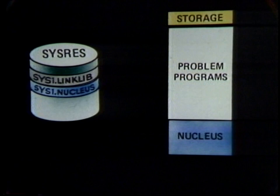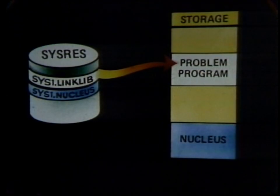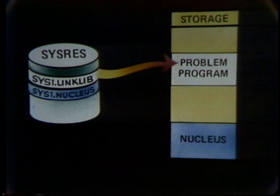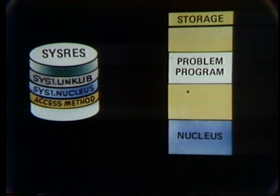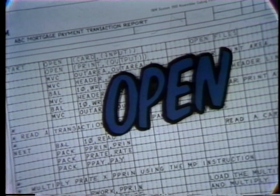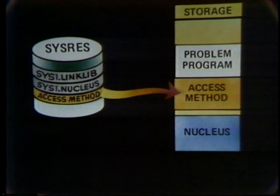Now let's see how a problem program gets loaded into storage. The loading routine is part of the nucleus. It retrieves a program from a program library — in this case, let's assume sys1.linklib — and then makes the necessary changes to the address constants in the program so that it can be loaded into any available storage. While we still have a problem program in storage, let's see how it gets its IO accomplished. In order to perform IO, an access method is required. If the access method is not already in storage, the supervisor will have to get it. The access methods reside in a system dataset. When the programmer is ready to process data, he issues an open macro in assembler language or some equivalent in a high-level language. The open macro causes control to be passed to the supervisor, which in turn loads the access method. In some systems, the access methods are resident and need not be loaded.